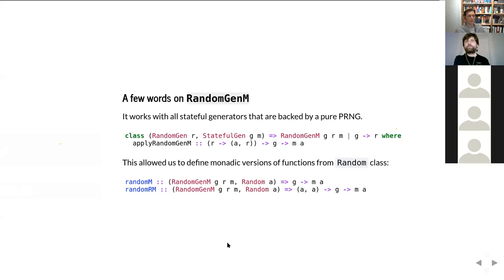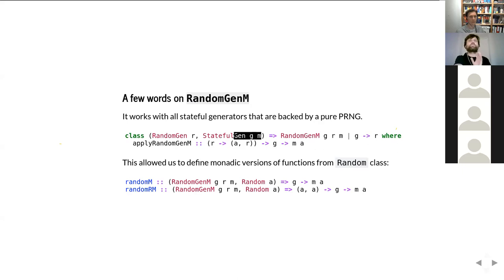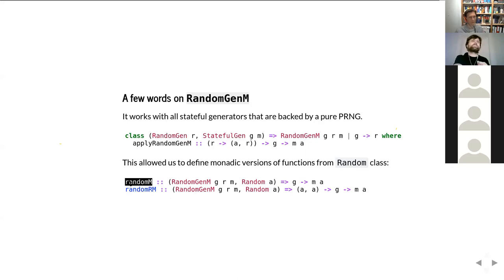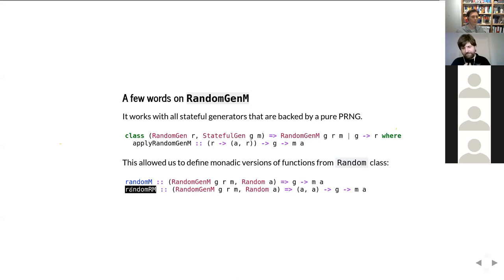One final addition to the interface is the 'RandomGenM' type class. It's a bit contrived with functional dependencies. It unifies generators that are both mutable and have a 'RandomGen' instance. The sole reason for this is to provide 'randomM' and 'randomRM' — monadic versions of the old 'random' functions. This is useful if there's a library that has a 'Random' type class instance and you want to use it in the monadic interface — with this approach you'll be able to do so.